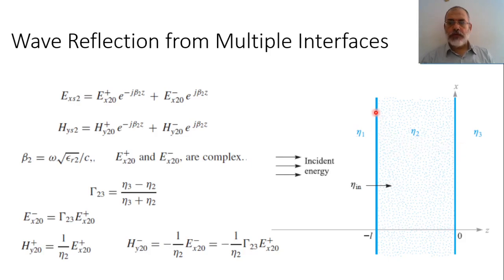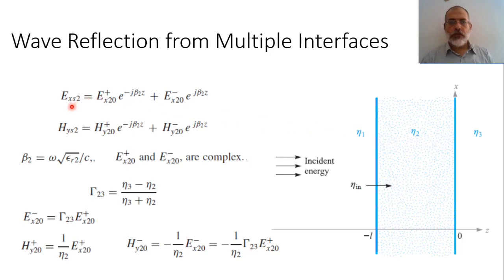It is required to find out the reflection coefficient at the interface at Z = -L. The total field inside region 2 can be represented as a wave propagating in the positive Z direction plus a wave propagating in the backward Z direction. So the total field in region 2 is: EX2⁺ propagating in the forward direction as E^(-jβ₂Z), plus EX2⁻ multiplied by the backward propagating function E^(+jβ₂Z). Both amplitudes are unknown.